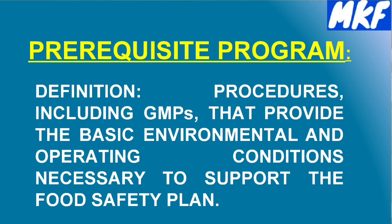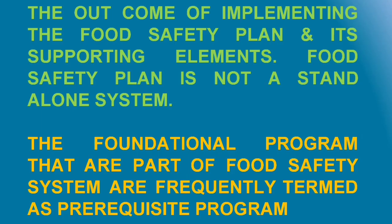Prerequisite programs are procedures including GMPs that provide the basic environmental and operating conditions necessary to support the food safety plan. The food safety system is the outcome of implementing the food safety plan and its supporting elements. GMPs — Good Manufacturing Practices — fall under CFR 21 Part 117 Subpart B.